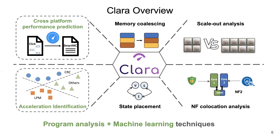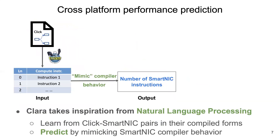At the high level, CLARA could profile key performance metrics accurately, and improve offloading performance significantly by applying learned strategies. We will first talk about the high-level roadmap for cross-platform performance predictions. As we have mentioned, Click programs can't directly run on SmartNIC platforms. Moreover, it is also possible that users may not always have easy access to SmartNIC platforms. To account for these scenarios, we hope CLARA could predict the number of SmartNIC instructions after offloading without actually running a SmartNIC program or using a SmartNIC compiler. At first glance, this is a very difficult task, because in order to do this, CLARA needs to somewhat mimic SmartNIC compiler behavior, which is pretty much a black box. It is usually hard to understand how the SmartNIC compiler does instruction selection and optimizations.